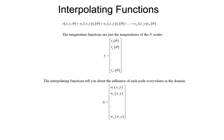One way to think about it: if you're right at the node, the influence of the temperature at that node is really high. As you move away from that node, the influence should go down. And if you move more than about one element away from the node — for these linear elements — the influence goes to zero. That's really the way to think about what these interpolating functions are.